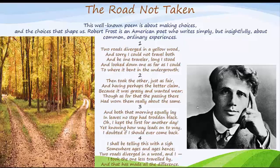Now let's read the second stanza: 'Then took the other, just as fair, and having perhaps the better claim, because it was grassy and wanted wear, though as for that the passing there had worn them really about the same.' The speaker takes the other path, judging it to be just as good a choice as the first and supposing that it may be the better option since it looks grassy and less worn or used than the other path. Now that the speaker has already walked on the second road, he thinks that in reality the two roads are more or less equally worn or used.